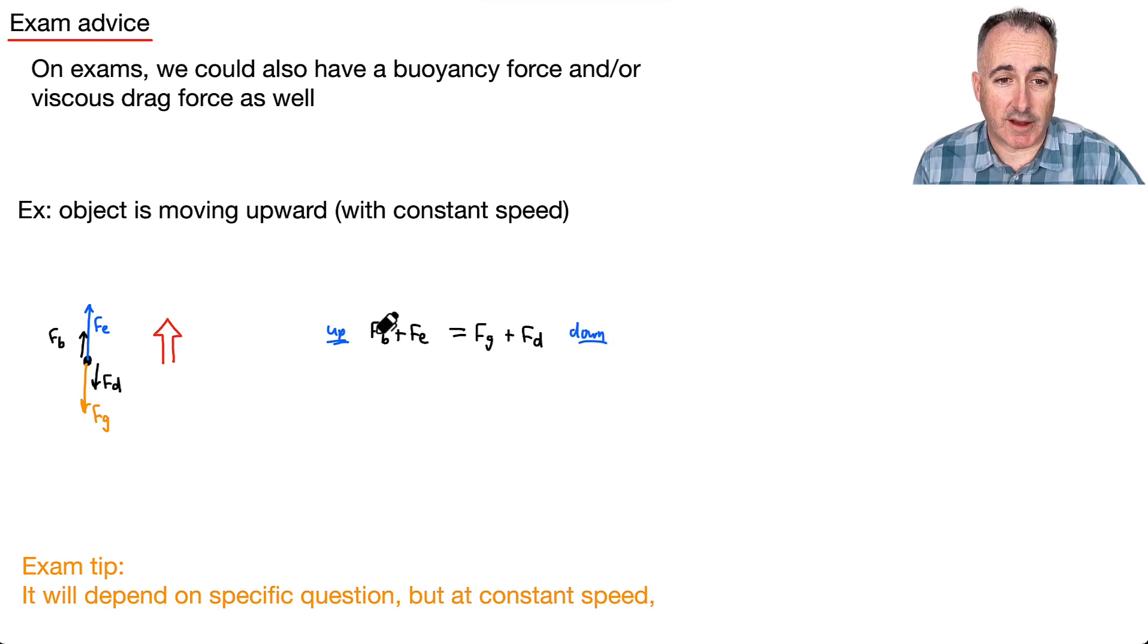We could actually figure these out. I mean, we have the buoyancy force equation, right? It's just rho, V, G. And then we have the electric force. Let's see, that's going to be just E times Q. We have our gravitational force going downwards. That'll be mg.